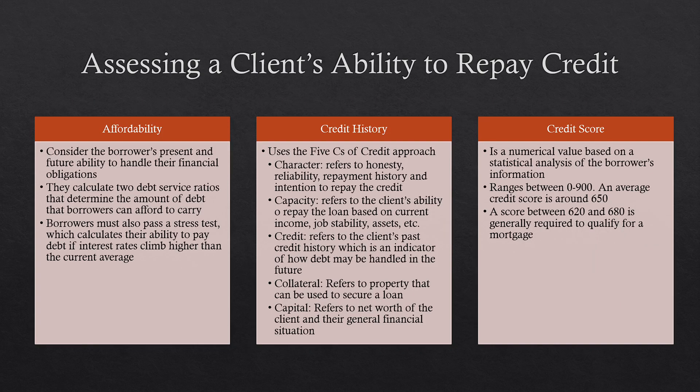When a financial institution gives a loan or mortgage they need to assess a client's ability to repay. They do this by looking at three main things. The first is affordability — considering the borrower's present and future ability to handle financial obligations. They calculate two debt service ratios to determine the amount of debt borrowers can afford, and they must also pass a stress test which calculates their ability to pay debt if interest rates climb higher than the current average.